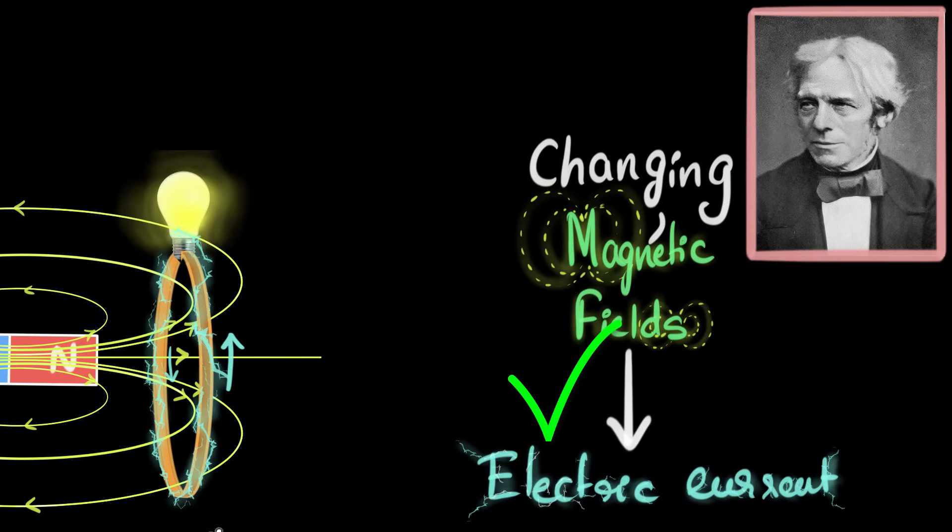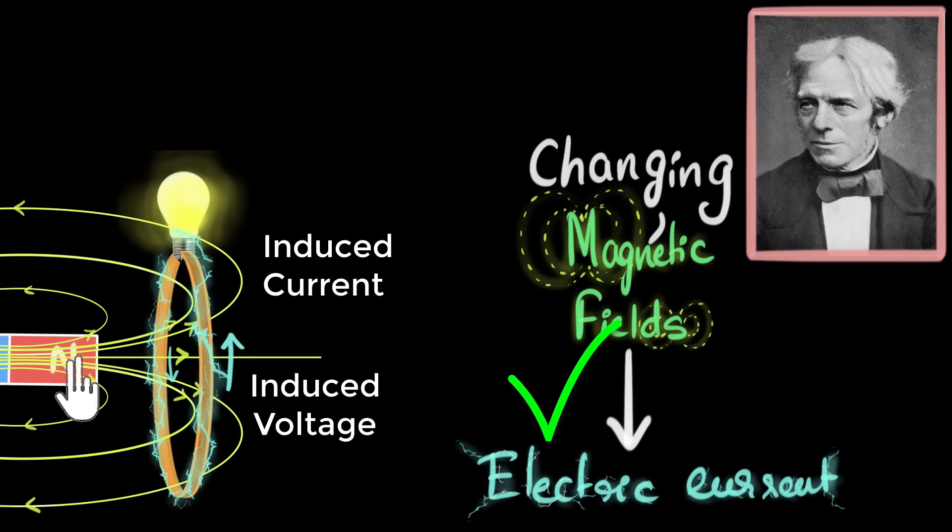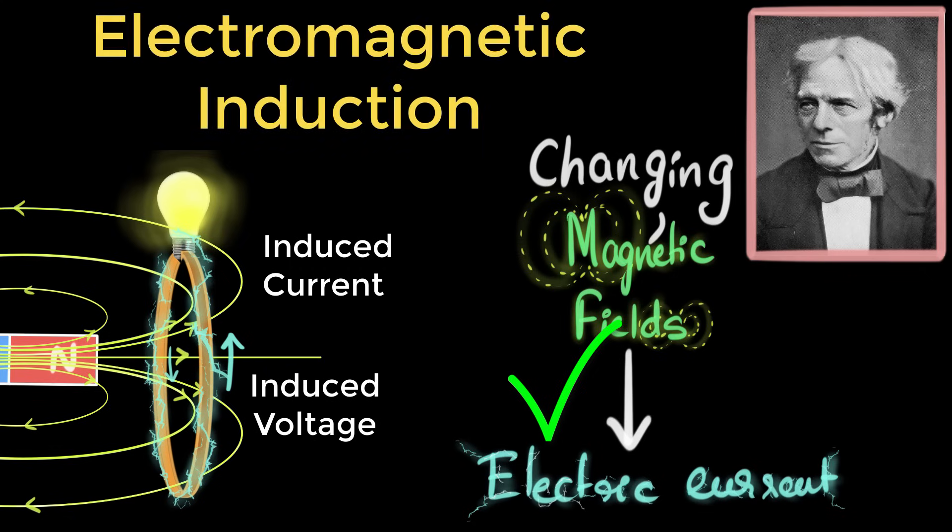So the current that is produced over here, or we can also say a voltage is produced because of which the charges are moving and we are getting a current. Due to a changing magnetic field, we call them as induced currents or induced voltage to differentiate it from the currents and the voltage we get from a battery. And this phenomenon is called electromagnetic induction.